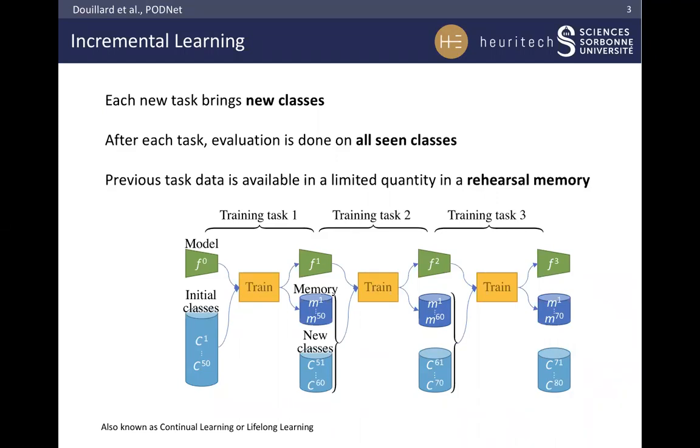Moreover, we cannot simply reuse all previous task data. It would be too easy. We only use a very limited amount. In our case, it's only 20 images per class.